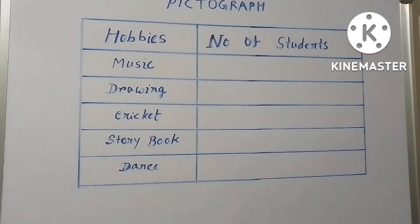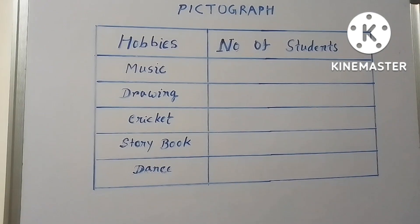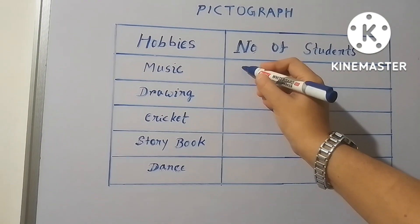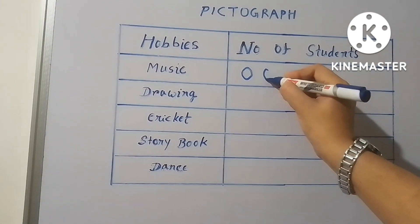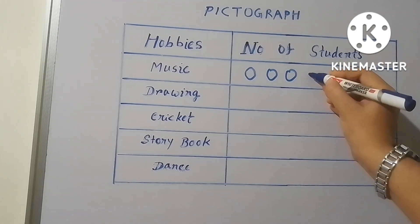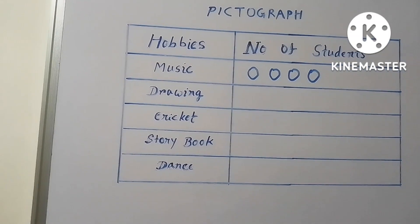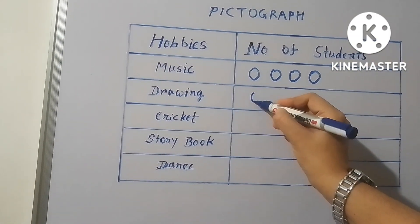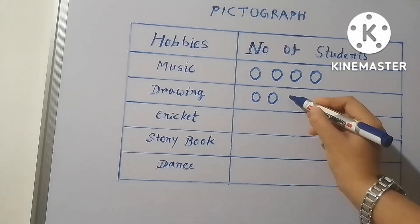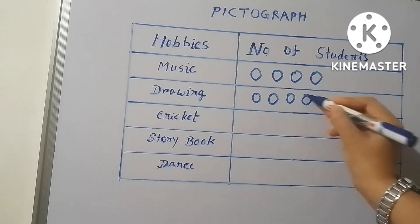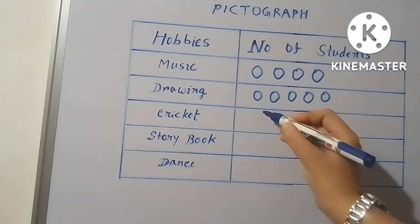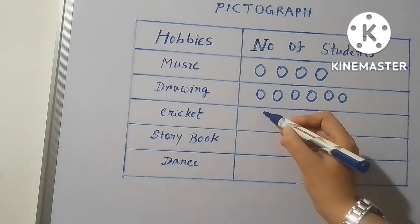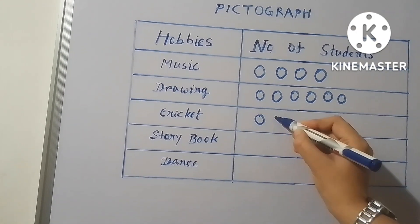Now I am drawing some circles against the different names of the hobbies. Those circles will denote how many students love music, drawing, cricket, storybook, or dance. We can't put numbers here — we have to draw pictures in the pictorial form, and lastly we have to give the keys for these pictures.